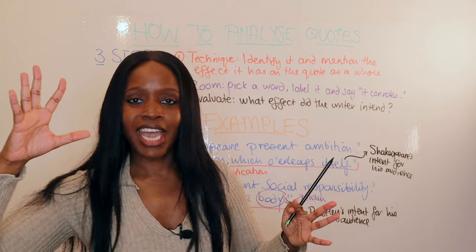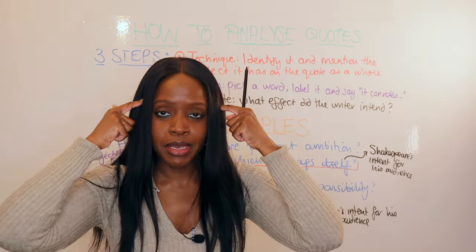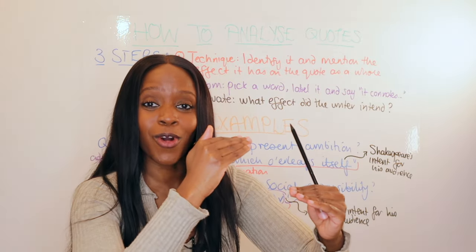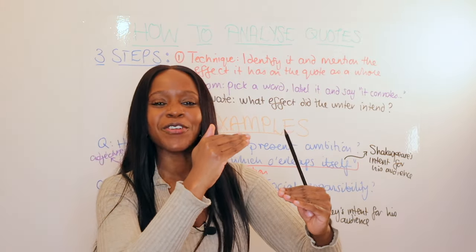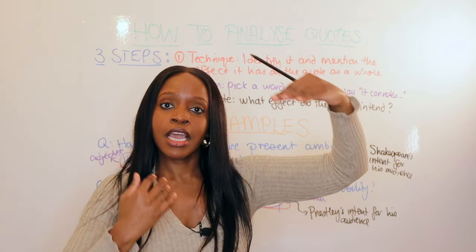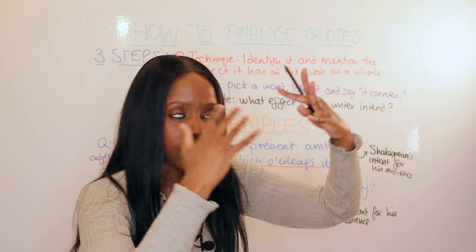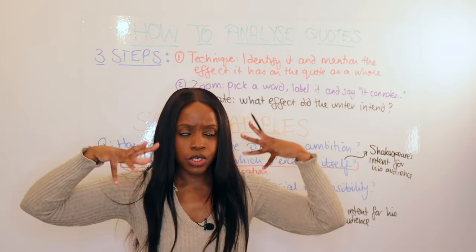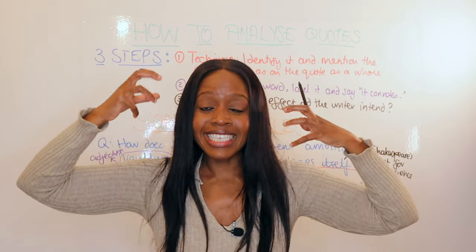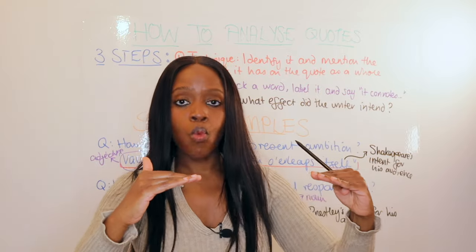Blood, fear — when you mention how a word connotes something or paints an image in our minds, you're going one level deeper in your analysis. You start by talking about the general technique — say, a metaphor — but then you zoom in and ask: what does this noun, verb, or adjective suggest to us? That is stepping one level deeper when analyzing the effect.